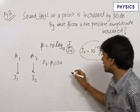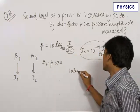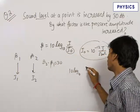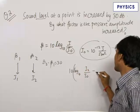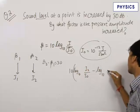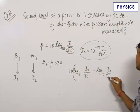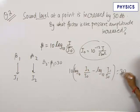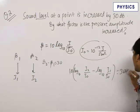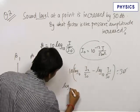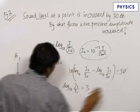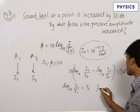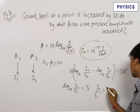Let us write the equation here. Therefore, we get 10[log₁₀(I₂/I₀) - log₁₀(I₁/I₀)] = 30. This gives us log₁₀(I₂/I₁) = 3. Therefore, I₂/I₁ equals 1000.